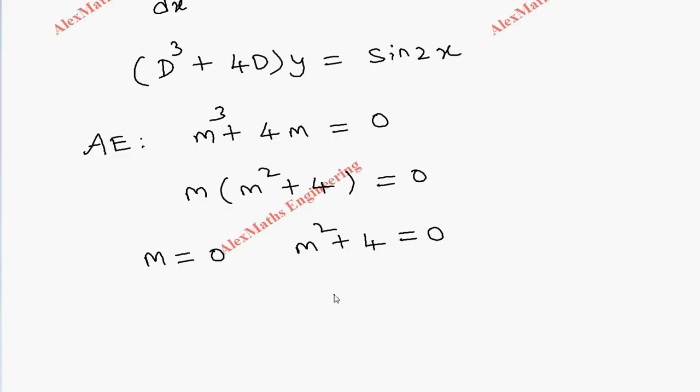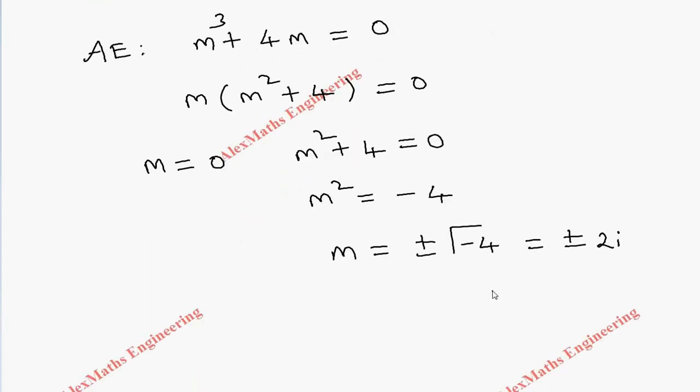From this, m² = -4 and m = ±√(-4), which is ±2i. It is an imaginary root in the form of α ± iβ.